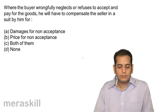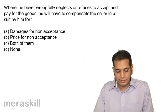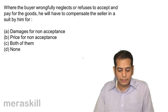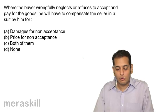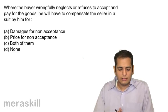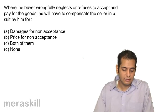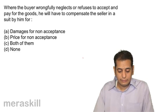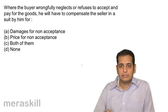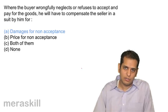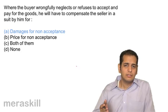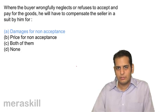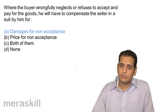Next: Where the buyer wrongfully neglects or refuses to accept and pay for the goods, he will have to compensate the seller in a suit for (a) damages for non-acceptance, (b) price for non-acceptance, (c) both of them, (d) none. The answer is (a) damages for non-acceptance. There cannot be a price for non-acceptance because he is not accepting the goods, so goods remain with the seller. Only losses due to non-acceptance will be required to be paid.